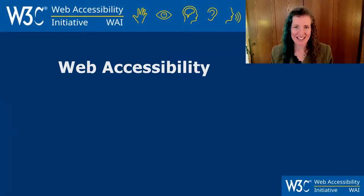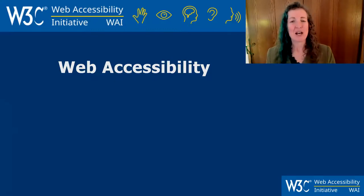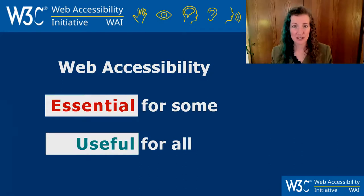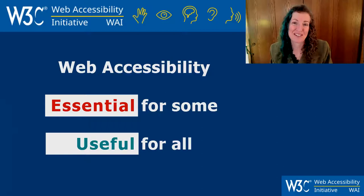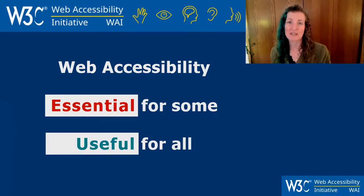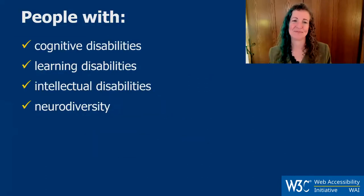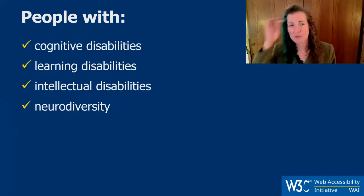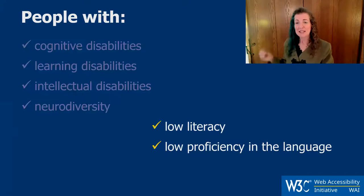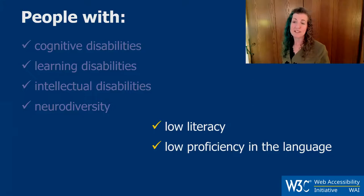While we do focus on disability, the things that we do for accessibility for people with disabilities actually benefit everybody. Web accessibility is essential for some people with disabilities and useful for all, even if you don't have disabilities, because of situational limitations. For example, what we do for people with cognitive disabilities, learning disabilities, intellectual disabilities, and neurodiversity ends up benefiting and helping people with low literacy or people with low proficiency in the language.